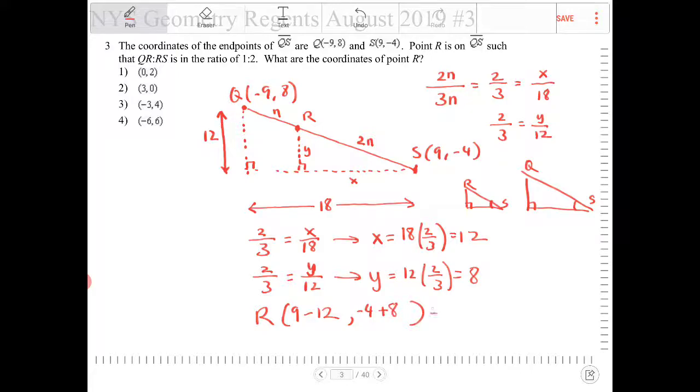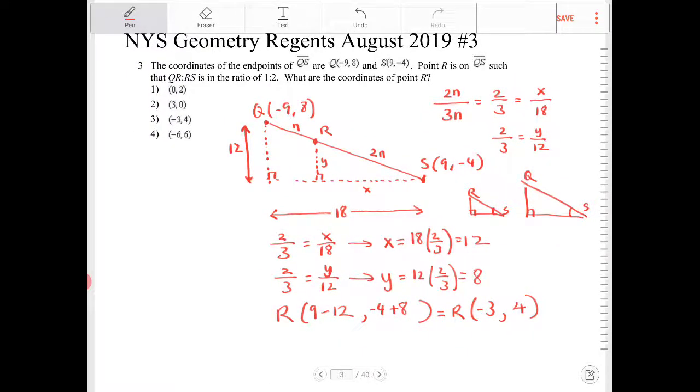So what is that? That will be negative 3, positive 4. Those are the coordinates for R right there. And which option is that? Negative 3, 4. That would be option 3.